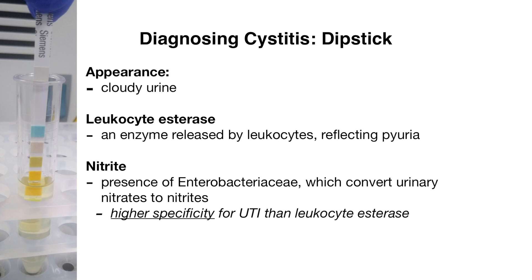Obtaining a dipstick allows us to get a few different pieces of information. On gross inspection, the urine can appear cloudy indicating an infective process. On the dipstick itself, we're looking for any positive leukocyte esterase, which is an enzyme released by leukocytes indicating that there are white blood cells in the urine. A positive nitrite is also helpful because it indicates the presence of Enterobacteriaceae, which convert urinary nitrates to nitrites. This basically indicates that there is bacteria present in the urine.